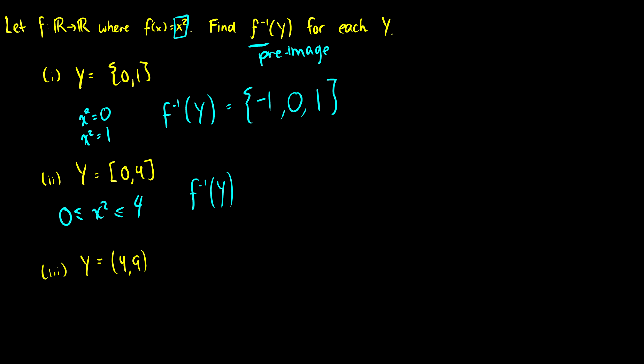So when we take the square root, the square root is going to be between -2 and 2. Because remember, the square root of 4 can be -2 or 2 and the square root of 0 is just going to be 0. So x can be in this whole interval here. So our pre-image of Y is going to be [-2, 2] inclusive.